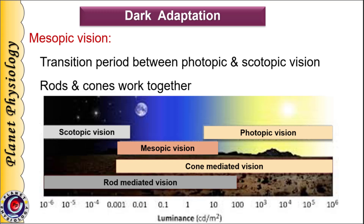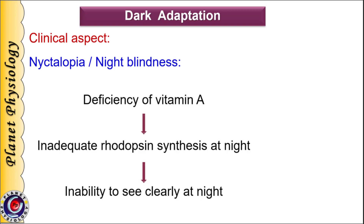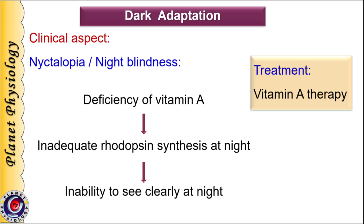During night, rhodopsin requirement increases drastically, which is fulfilled by its synthesis from opsin and retinal. If necessary, stored vitamin A is also utilized to synthesize rhodopsin. If a person has vitamin A deficiency, the required quantity of rhodopsin cannot be synthesized, and as a result the person cannot see clearly at night. This condition is called night blindness or nyctalopia. It can be reversed successfully by timely administration of vitamin A, but if ignored it can permanently damage photoreceptors.